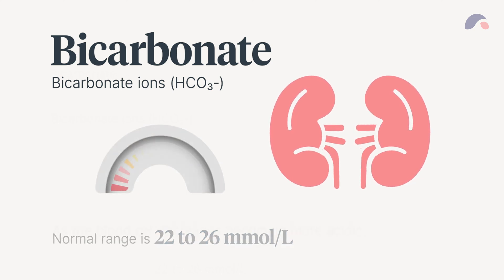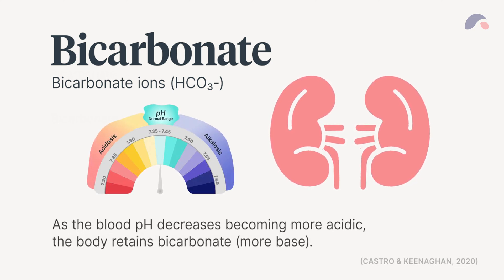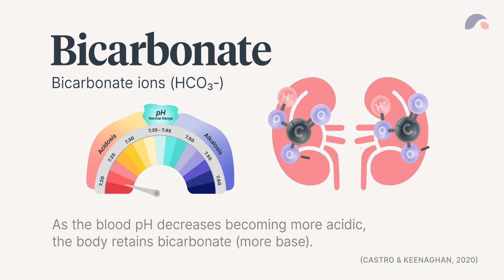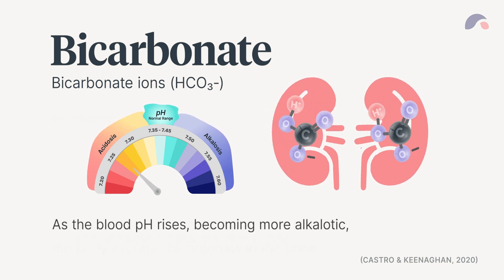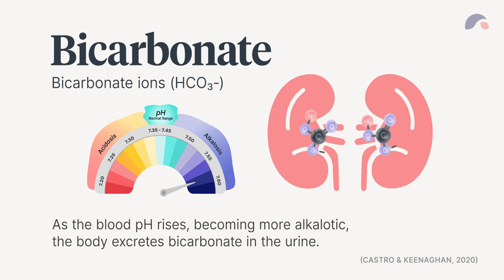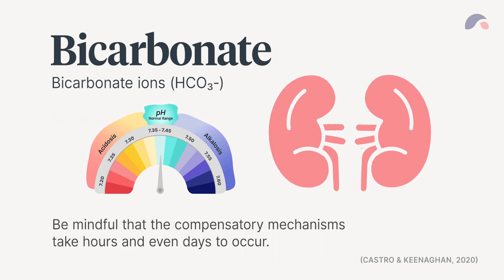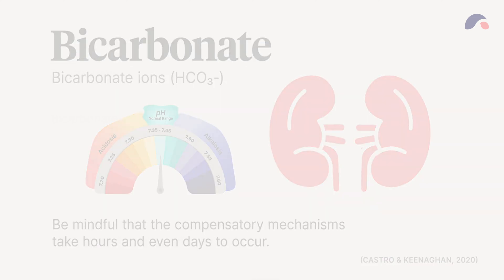As the blood pH decreases, becoming more acidic, the body retains bicarbonate — more base. As the blood pH rises, becoming more alkalotic, the body extracts bicarbonate in the urine. Be mindful that these compensatory mechanisms take hours and even days to occur.